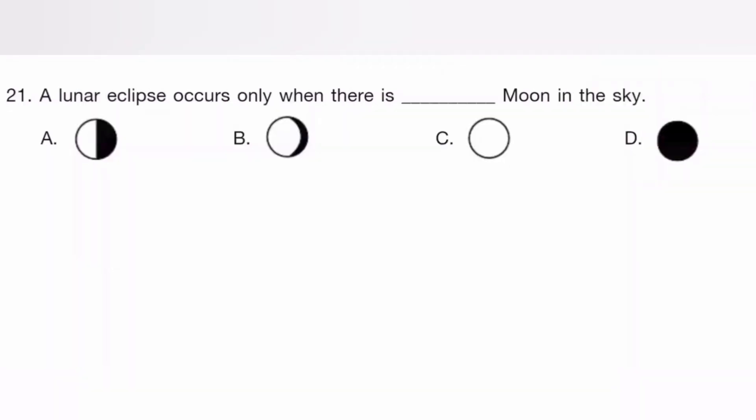A lunar eclipse occurs when there is dust on the moon in the sky. The answer is C.